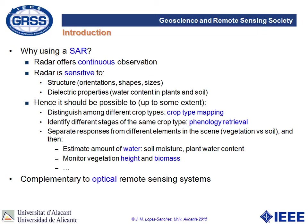For instance, it can be possible to distinguish among different crop types to provide crop type maps, or to identify different stages of the same crop along time — what we call phenology retrieval. In principle, we should also be able to separate different responses from different elements in the scene, like vegetation and soil, and then estimate parameters of interest such as water in the soil, water in the plants, or biomass of the vegetation. This information is also complementary to that provided by optical remote sensing systems, so it is a good idea to combine both technologies.